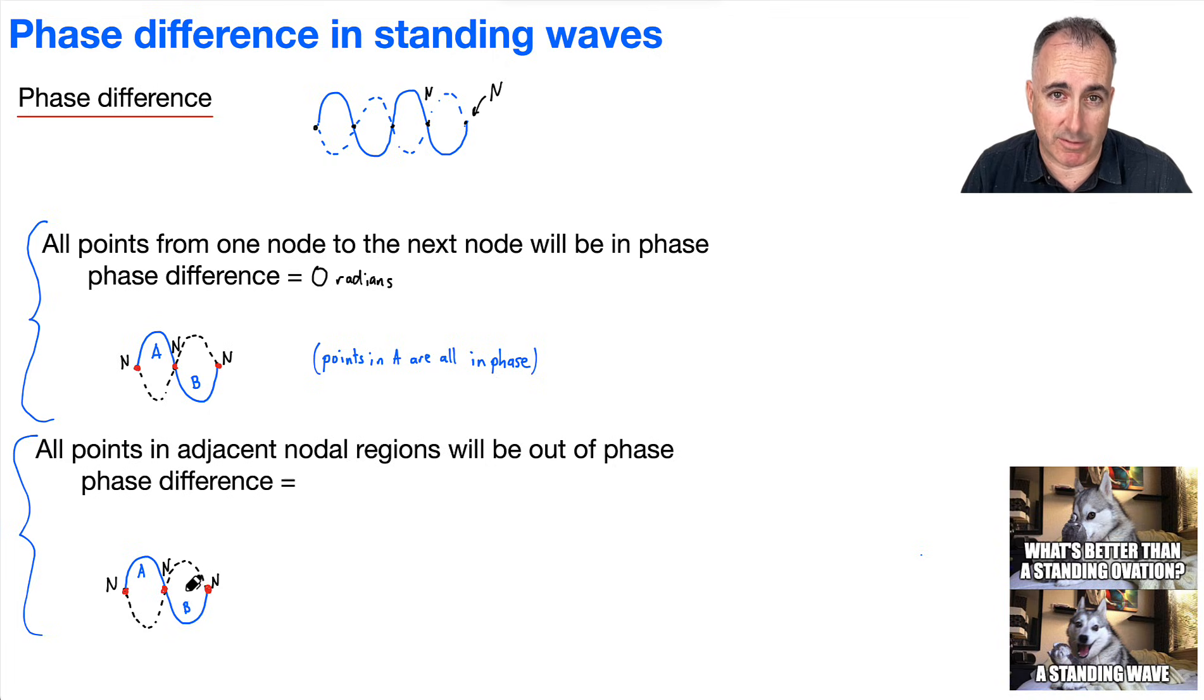Now we could state the phase difference. To be out of phase means 180 degrees or pi radians out of phase. That's the key thing. In the first one, the phase difference was zero radians, whereas this one is actually pi radians. Now why is it pi radians?